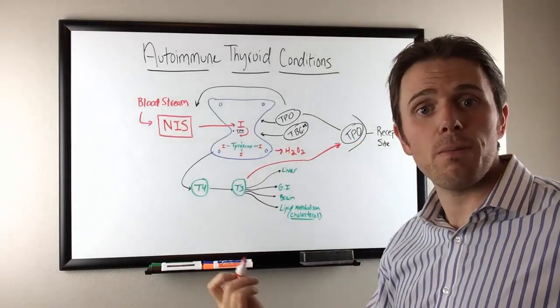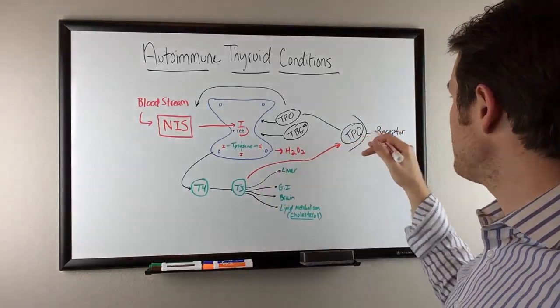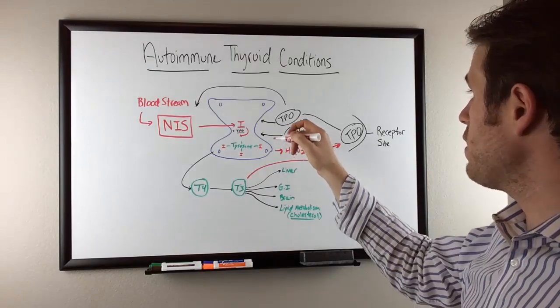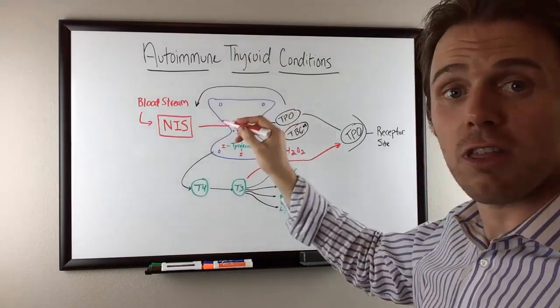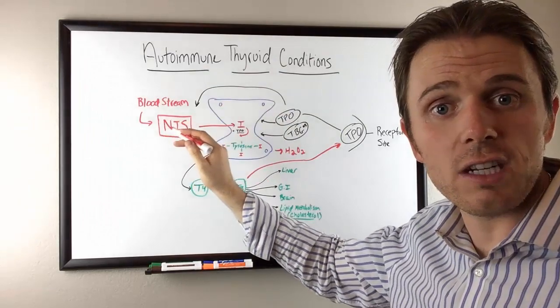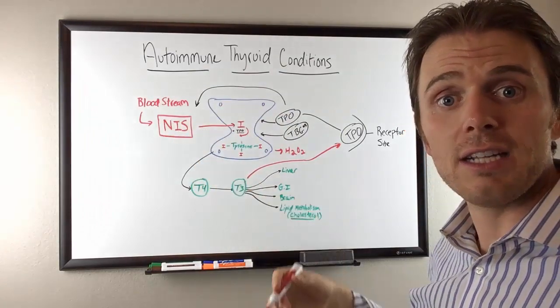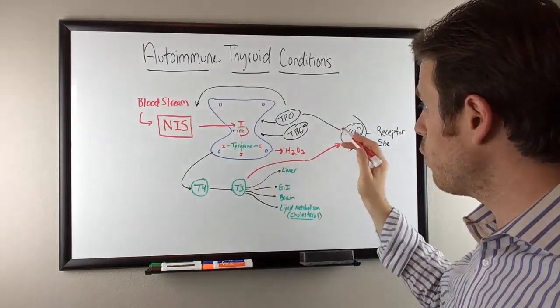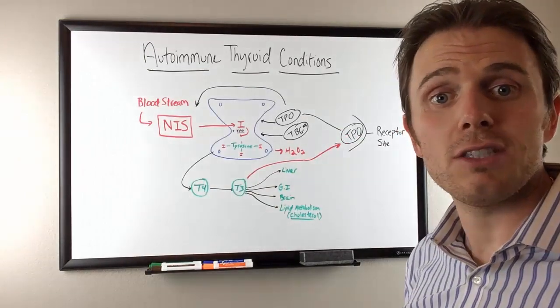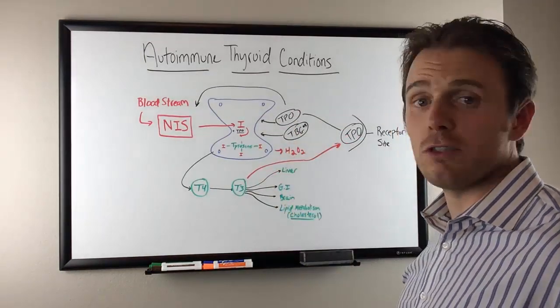They can affect T3 from coming in and binding into the receptor site. For a hormone to have a metabolic response, it actually has to bind to this receptor site here. So we have antibodies affecting and damaging our thyroid tissue, affecting our sodium iodine symporter system, and blocking the receptor sites. You can see all of the various damage that's going on.